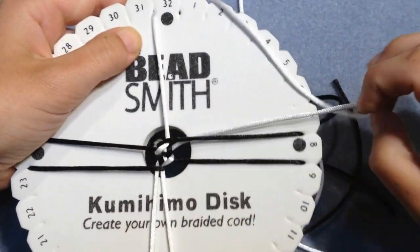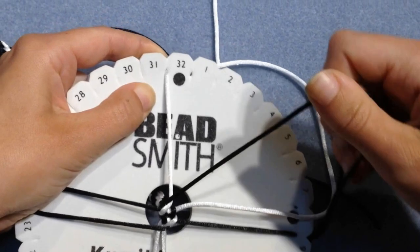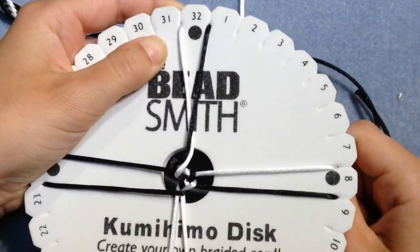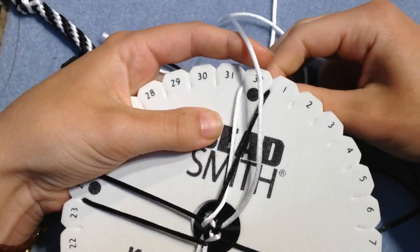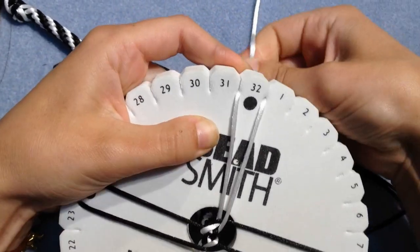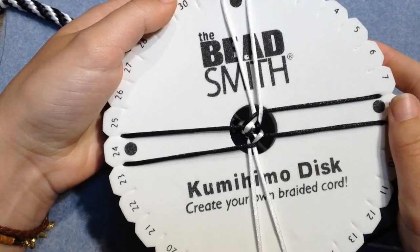So say I had a black here and a white here, I would get a checkerboard pattern. There's lots of different patterns that you can do. If you're interested in that, you can also go to the kumihimo website to see the different patterns that you can do.